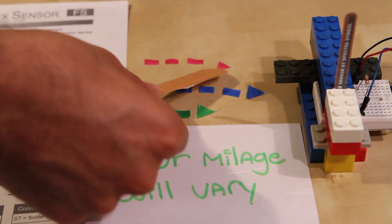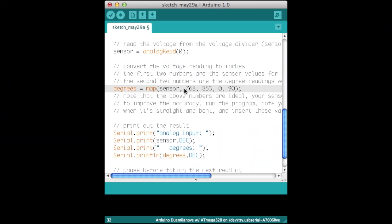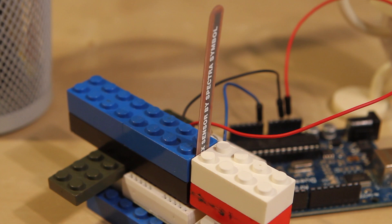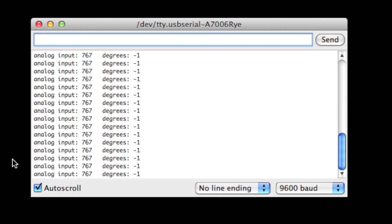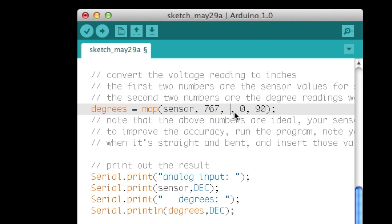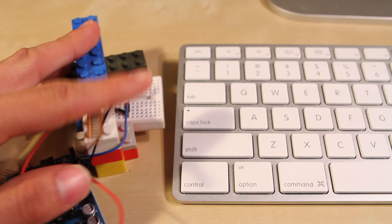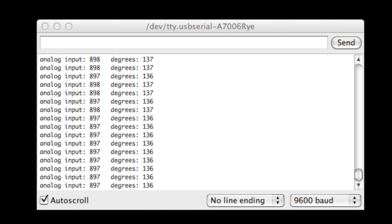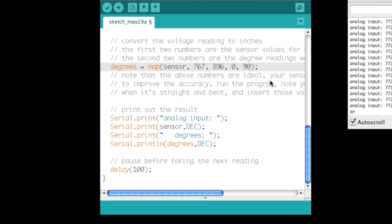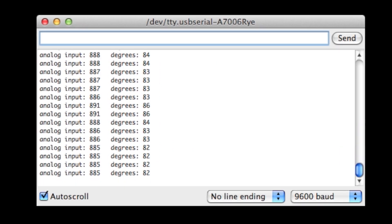There is actually a simple fix to this. I'll manually calibrate the code for my specific sensor. For example, when my sensor is straight, I generally get the number 767, so I'll specify that as zero degrees. Here's the most that I can bend it, which gives me about 896. I'll set that as 90 degrees. Now I'm getting consistent results.